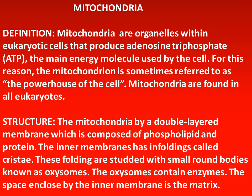Definition: mitochondria are organelles within eukaryotic cells that produce adenosine triphosphate (ATP), the main energy molecule used by the cell. For this reason, the mitochondrion is sometimes referred to as the powerhouse of the cell. Mitochondria are found in all eukaryotes. Note that mitochondria is the plural form of mitochondrion.